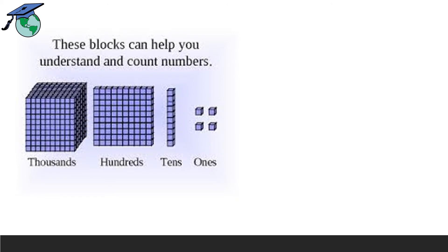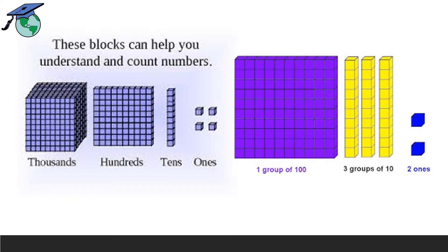These blocks can help you understand and count numbers. Ones, tens, hundreds and thousands. You can see these blocks will help you understand the place value. For an example, the blue color is the two ones. You can see these are alone. These blocks are not having any group.